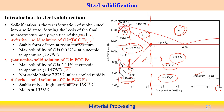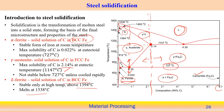Delta ferrite exists at very high temperatures, above 1394°C up to the melting point of 1538°C. Its maximum carbon solubility is also very low. Understanding these different phases from the iron-iron carbide equilibrium phase diagram allows us to analyze and understand the different steel microstructures that form during solidification and cooling.